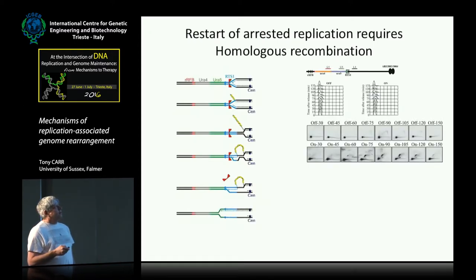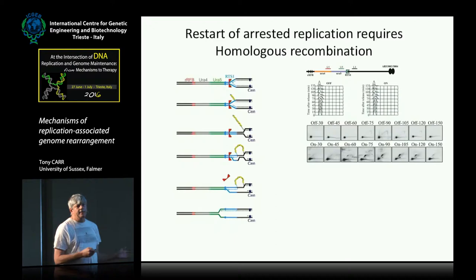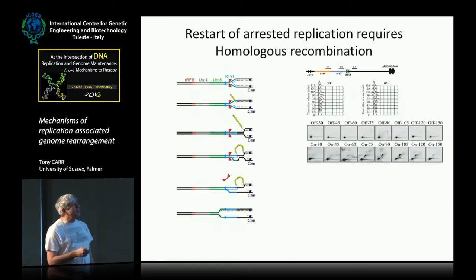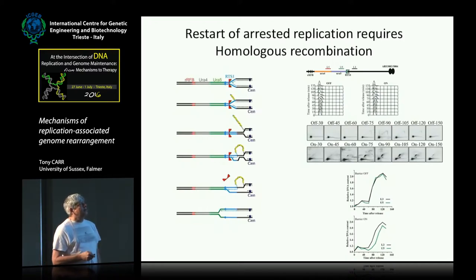We've characterized this in some detail. This is just an example of a synchronous culture going through S phase. If you don't have the barrier active — we can stop barrier activity by simply not expressing the protein that binds to the DNA sequence — this DNA is just replicated passively and normally. You just get passive replication, which you can see through the replication bubbles. But if you have the barrier active, the vast majority of forks arrest at this particular site, and you see that as a dot on what would be the Y arc.